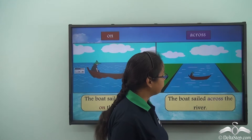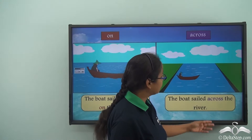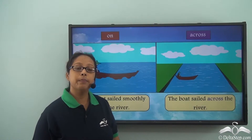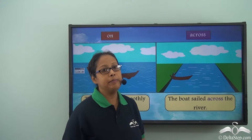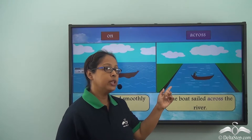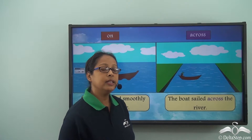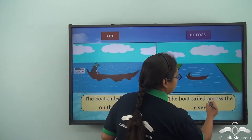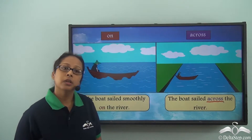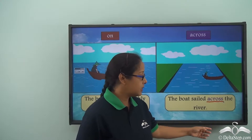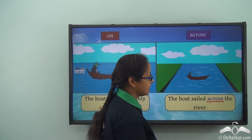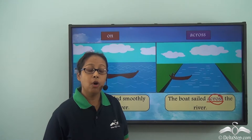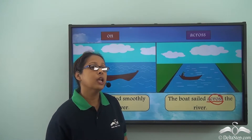The boat sailed across the river. Here the preposition is 'across' and we can see the boat is crossing from one side to the other. When we use 'across' we simply mean to cross over from one side to the other side. You will also notice that the word 'across' has 'cross' already in it, so it becomes easier to remember — when you are going across, you are crossing over.